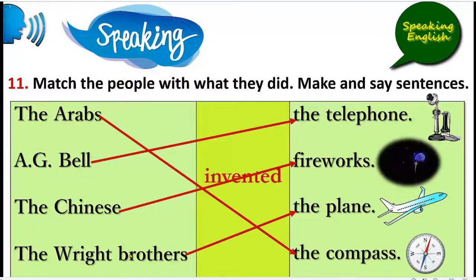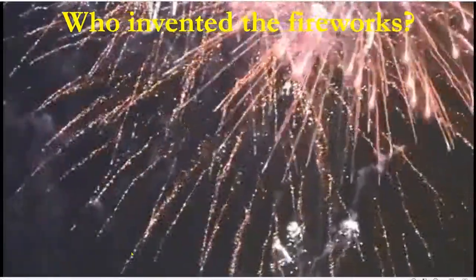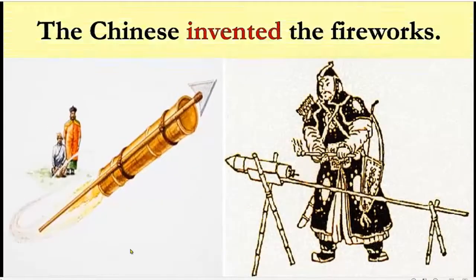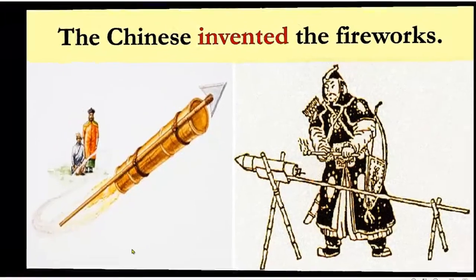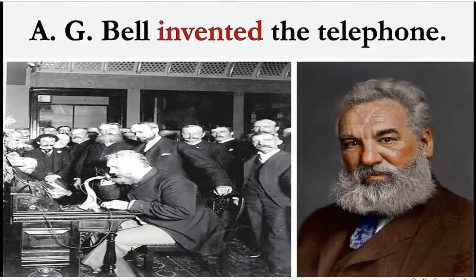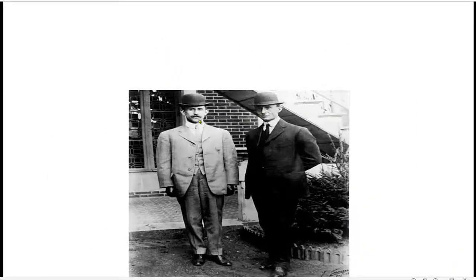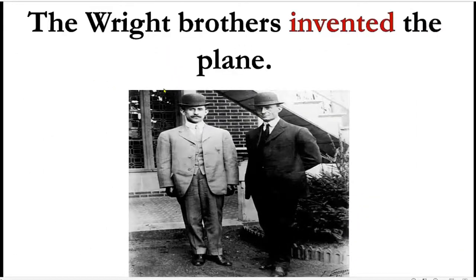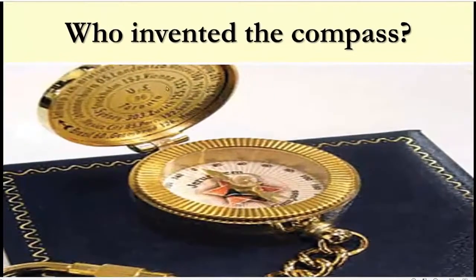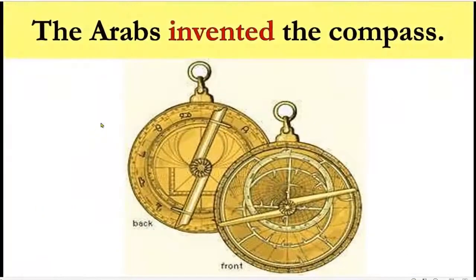Let's review: Who invented the fireworks? The Chinese invented the fireworks. Who invented the telephone? Agbo invented the telephone. Who invented the plane? The Wright Brothers invented the plane. Who invented the compass? The Arabs invented the compass.